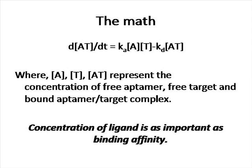For those that may not be completely satisfied with the zombie explanation, here is the math. In the binding equation, A represents the concentration of free aptamer, T represents the free target, and AT the aptamer-target complex. It is clear that the concentration of aptamer and target is as important in terms of binding as the binding affinity. This means that sequences that bind with a KD of one micromolar but are present at millions of copies are as effective at binding to the target molecule initially as sequences with a KD in the low nanomolar range which are present in a single copy.